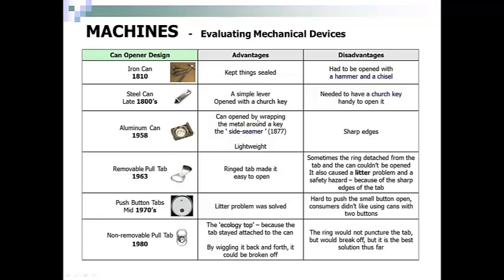Then people used an aluminum can, opened by wrapping the metal around a key called a side seamer. It was lightweight but had sharp edges. Then came a removable pull tab — the ringed tab made it easy to open. Sometimes, though, the ring detached from the tab and the can couldn't be opened. It also caused a litter problem and a safety hazard because of the sharp edges of the tab.